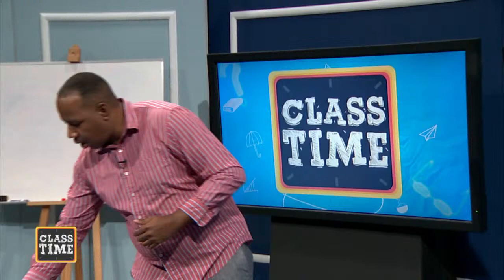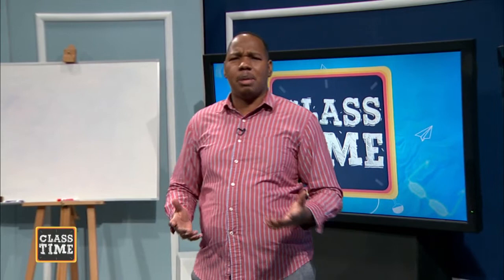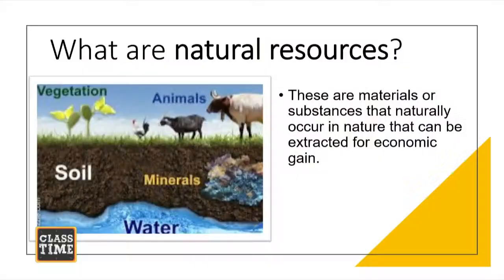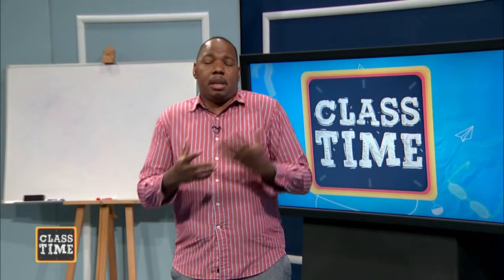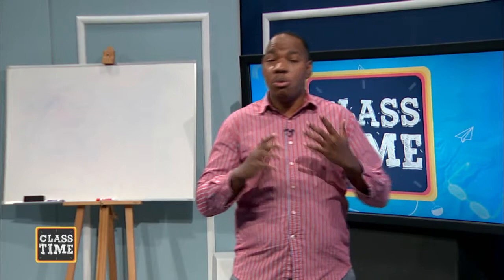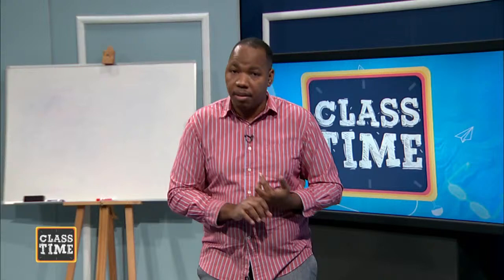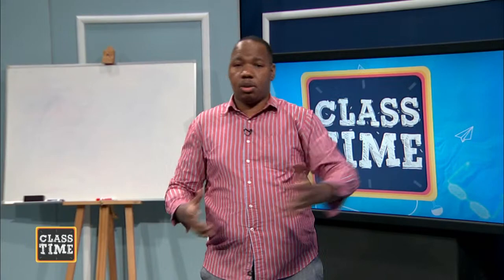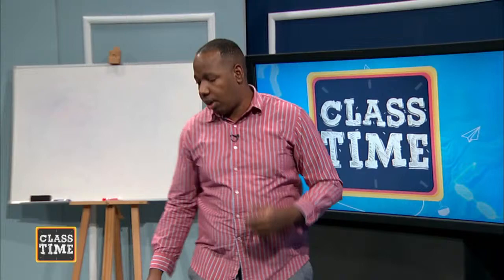To start, we have to first understand what we mean by natural resources. A natural resource is simply the materials or substances that occur naturally, and these are usually extracted for economic gain. Within the context of our CSEC syllabus, we are looking at those natural resources from which we derive some economic benefit. All the industries we spoke about last time depend on natural resources in some way — farming depends on the soil, the availability of water, and the climate, and all of those constitute elements of natural resources.